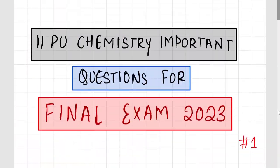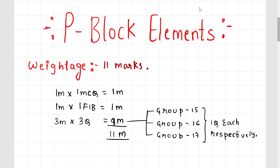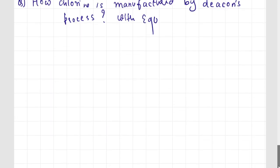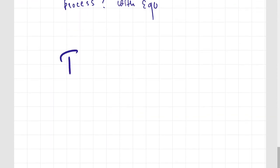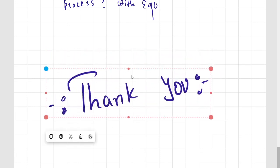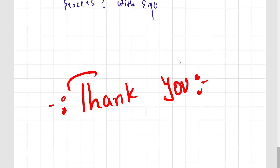Next: how chlorine is manufactured by Deacon's process with equations. Each question is what this P-Block chapter covers — you can solve almost all the questions. This was the first video of P-Block. In the next video, we'll cover the next part of the chapter. These many questions will be enough, so prepare the questions and try to do them. I will decide the next video depending upon your response.